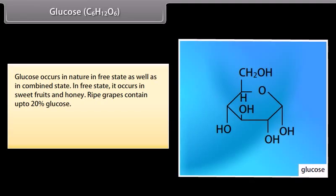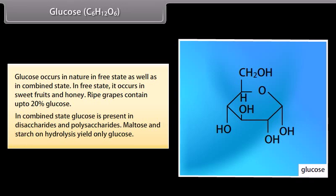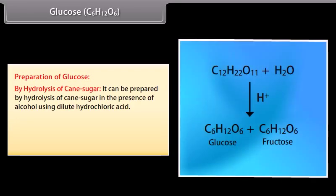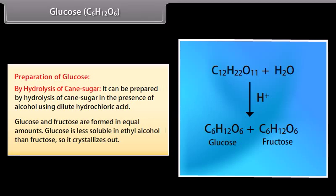Glucose (C₆H₁₂O₆) occurs in nature in both free and combined states. In free state, it occurs in sweet fruits and honey; ripe grapes contain up to 20% glucose. In combined state, glucose is present in disaccharides and polysaccharides — maltose and starch on hydrolysis yield only glucose. Glucose can be prepared by hydrolysis of cane sugar in the presence of alcohol using dilute hydrochloric acid. Glucose and fructose are formed in equal amounts; glucose is less soluble in ethyl alcohol than fructose, so it crystallizes out.